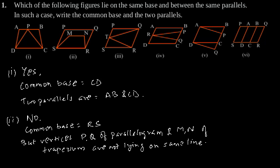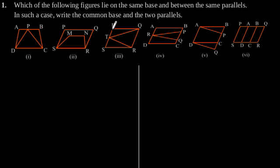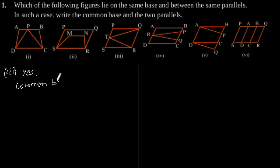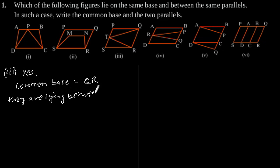Now figure 3. Here we can observe that parallelogram PQRS and triangle TQR have a common base that is QR, and they are lying between the same parallel lines PS and QR. So the answer is yes, since they have common base QR and lie between the same parallel lines PS and QR.